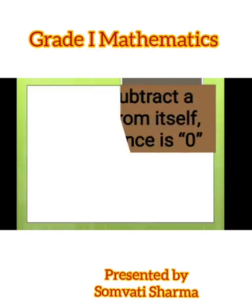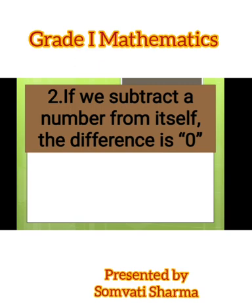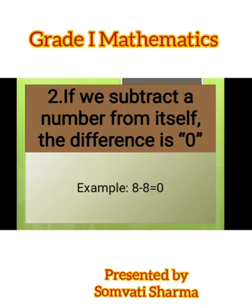Now, second is if we subtract a number from itself, the difference is zero. Here you can see the example. Eight minus eight means we are going to subtract a number from the number itself. The answer is zero.